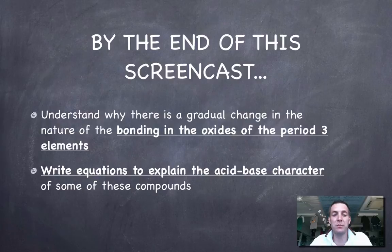So hopefully by the end of this film you'll understand why there's a gradual change in the nature of the bonding in the oxides of the period three elements. And you'll also be able to write equations that show why particular oxides have the acid-base characteristics that they do.